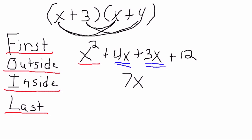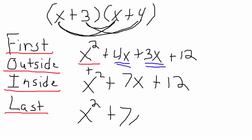4 plus 3 is 7. We bring down the x squared. We have x squared. And then we bring down the 12. Here we have the expression multiplied and combined. Therefore, our expression is going to be x squared plus 7x plus 12.